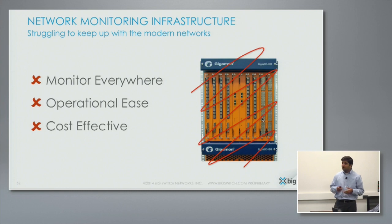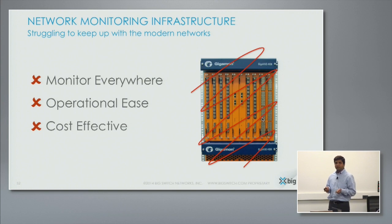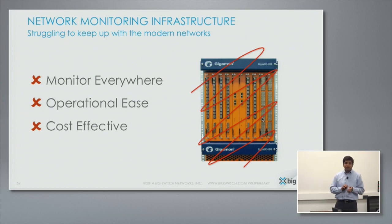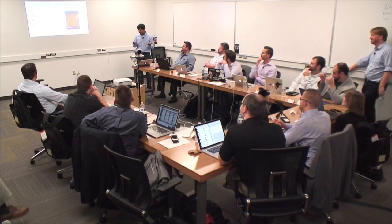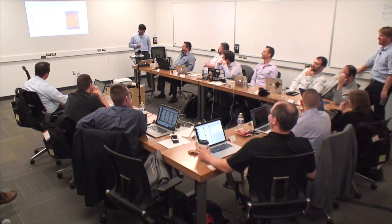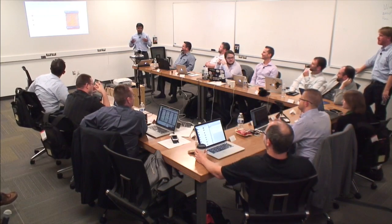The second claim is that the current appliances in this space — and by appliances I mean your network packet brokers — the appliances you'd get from some of the companies shown here are completely antiquated. When I'm designing my monitoring infrastructure, I'm looking to monitor everywhere in my network. The first thing I'm trying to do in a data center is have the capability to monitor and tap each and every rack. In fact, if I can tap each and every v-switch, that'd be even better.